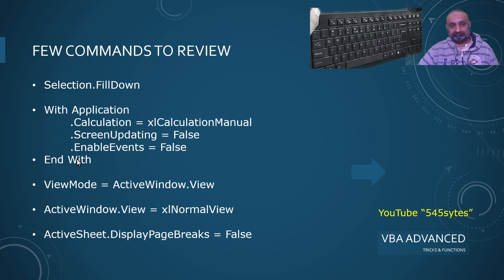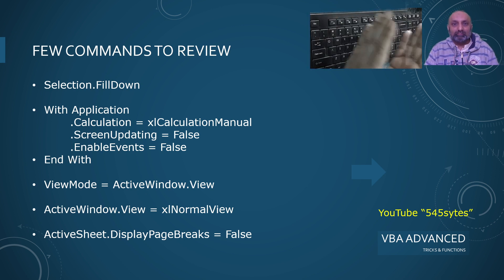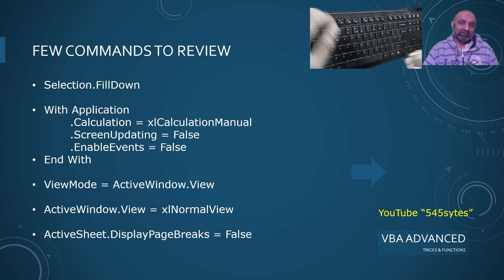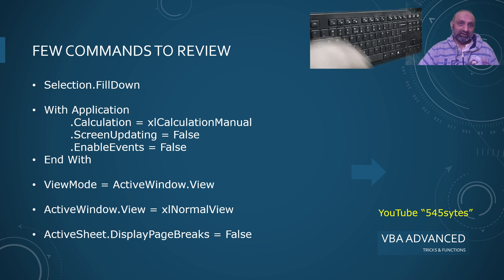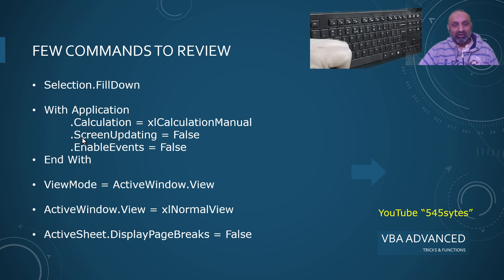With and End With — this is very important. You need to understand how to use With and End With. If you want to set properties of an object, instead of writing application.calculation is equal to this, then application.screenupdating is equal to this, then application.enableevents is equal to false — instead of writing 'application' three times, you can use With Application and End With, with dot calculation, dot screenupdating, dot enableevents. In this way you can set multiple properties with a single With and End With command. This is commonly used and programmers usually use the With command to set properties of objects.